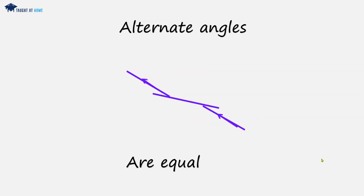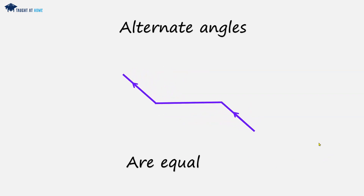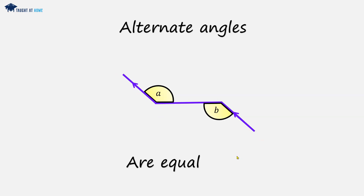Here's another example of alternate angles. It doesn't look like a Z-shape but it's still kind of like a Z-shape, just a bit stretched out. The alternate angles will be these angles here — a and b — and these will be equal.